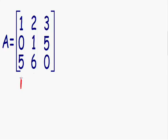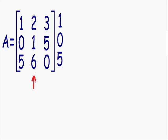We'll start with this first column right here. I'm going to copy it and place it to the right side of the matrix. Notice how I copied the numbers 1, 0, 5 and placed them to the right side of the matrix. Now I'm going to do the same exact thing with column 2 — copy it and place it to the right side of the matrix.